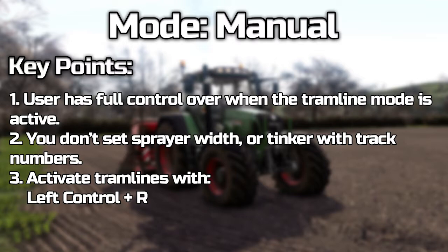In manual mode, it allows the user to have full control of when they want to put the tramlines in, meaning you do not need to put a sprayer width in and you will not need to mess around with the track numbers. You use the keybind Left Control and R to toggle the tramlines on and off. This would be useful for when you're doing the headlands, but otherwise I would recommend the other modes.